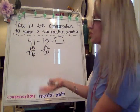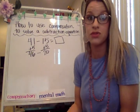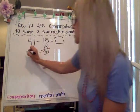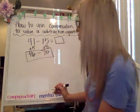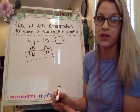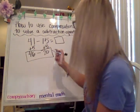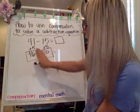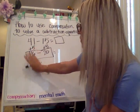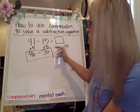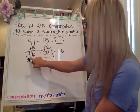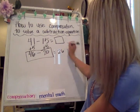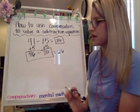Sometimes you might be asked what's an easier equation you could use to solve 41 minus 15. 46 minus 20 would be the answer — it gives you the same difference. We are only taking away two from the tens place. There aren't any ones, so the ones stay the same. Four tens minus two tens is two. So the difference is 26.